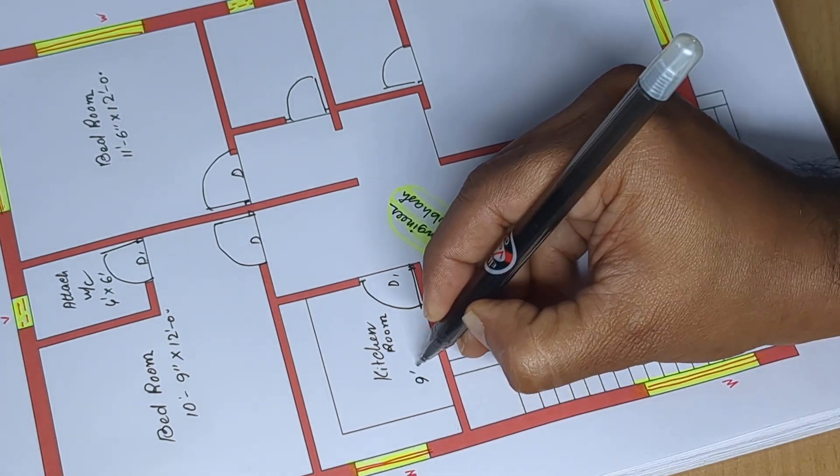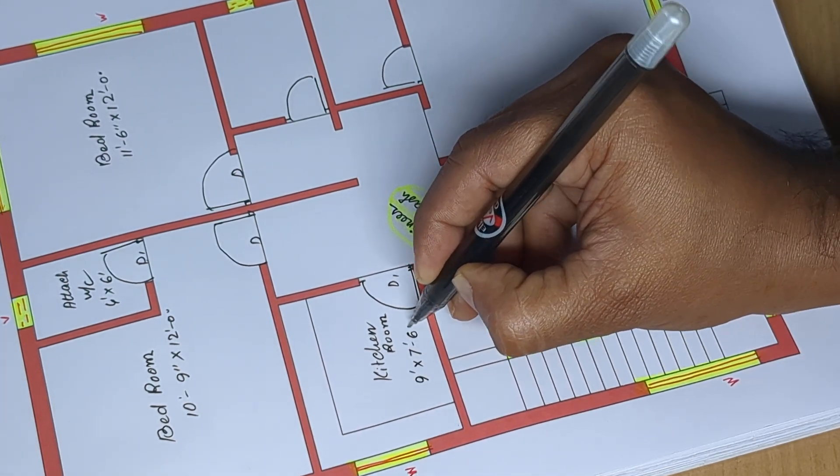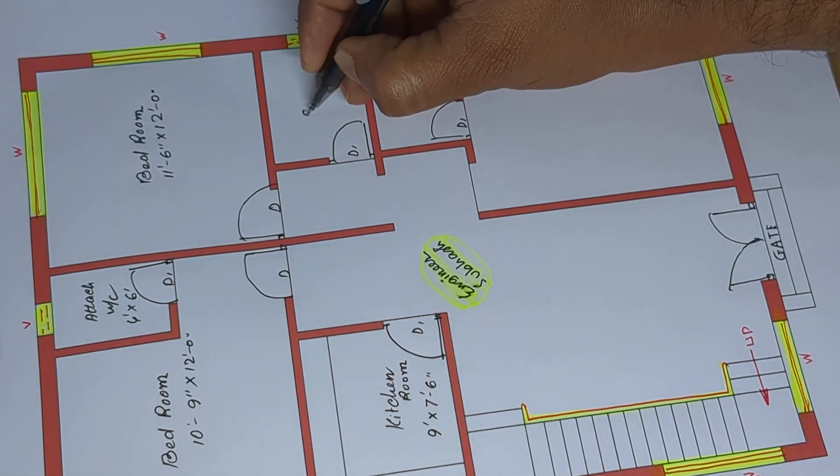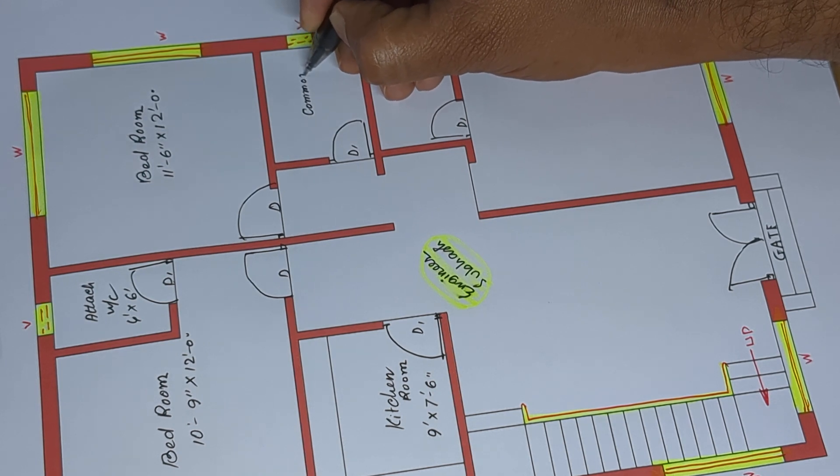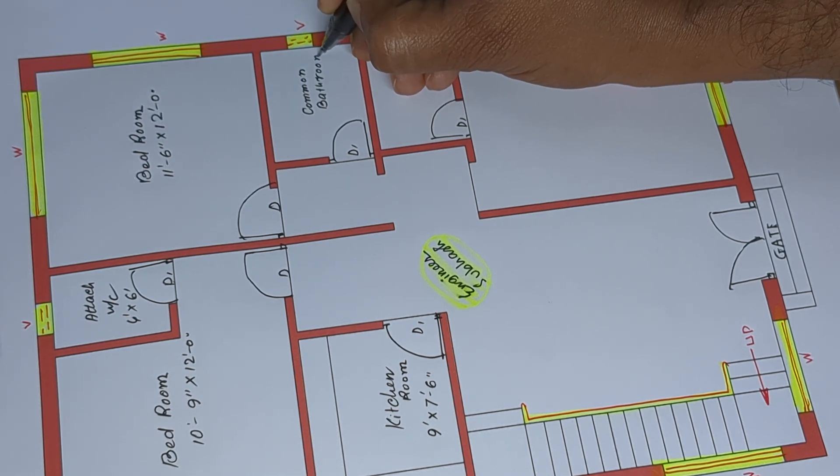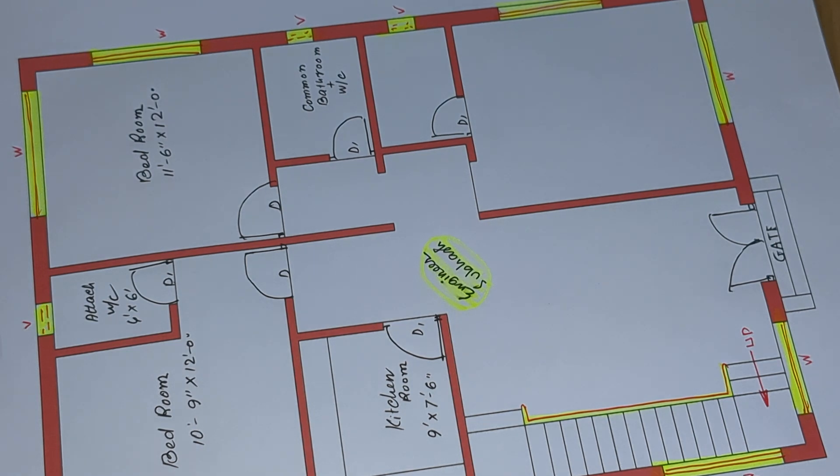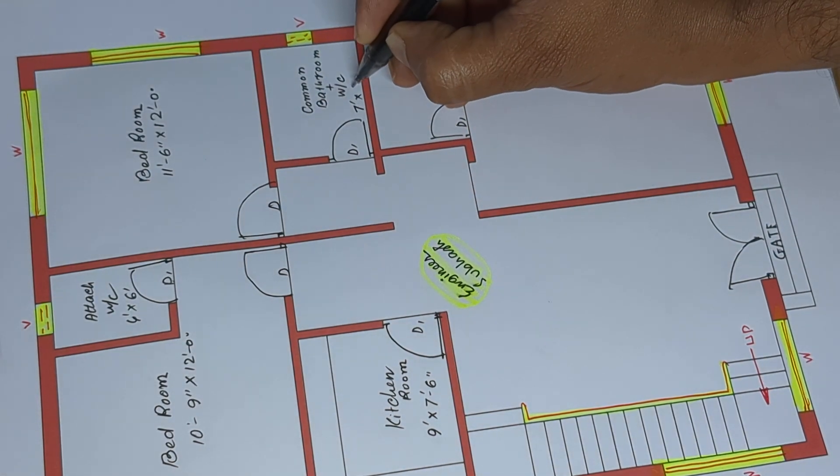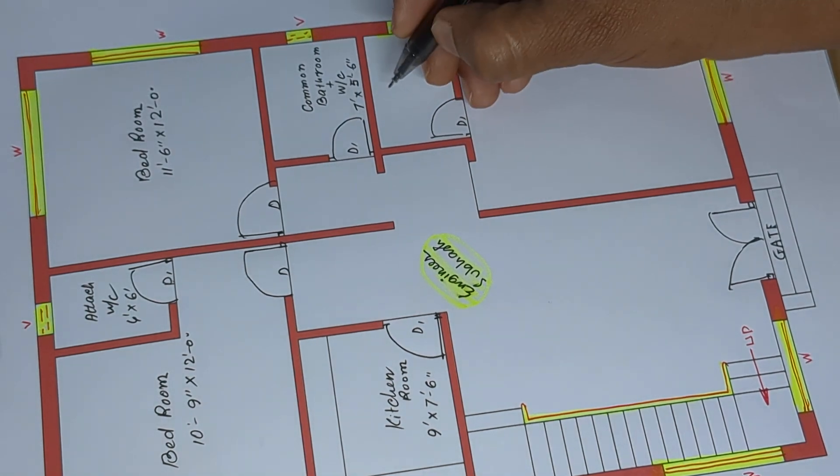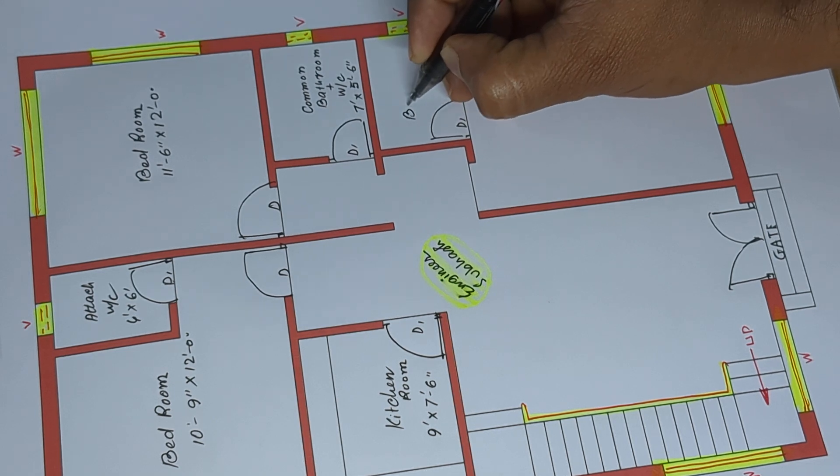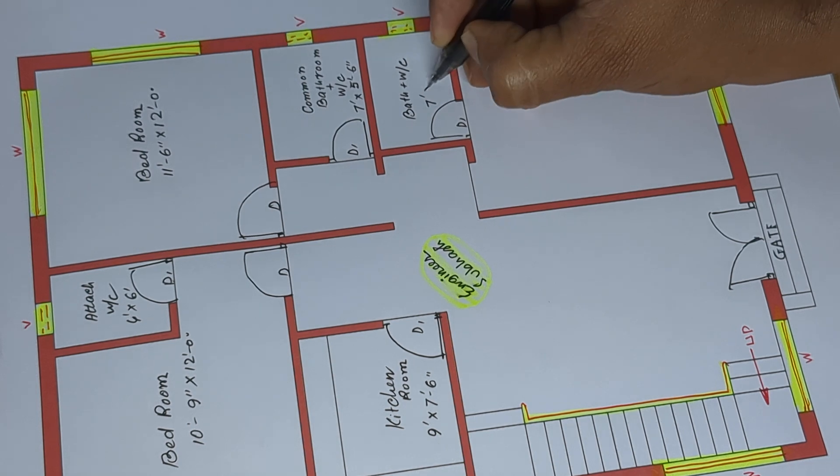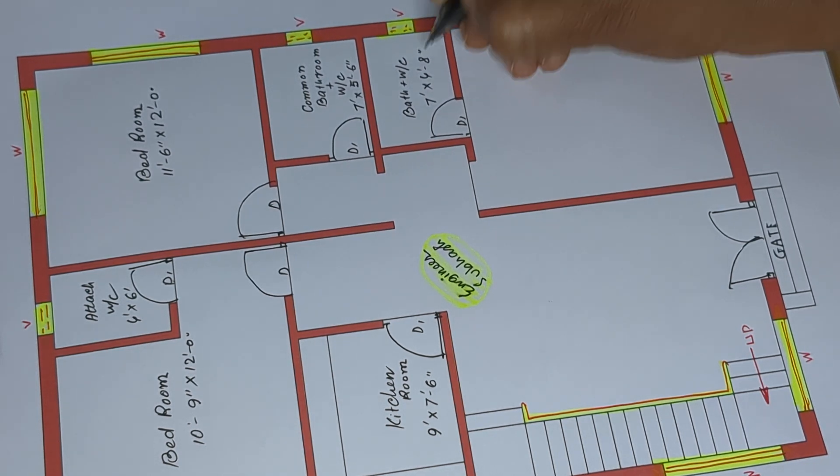Kitchen room 9 by 7 feet 6 inches, D1 common bathroom plus WC, 7 feet by 5 feet 6 inches, and bath plus WC, 7 feet by 4 feet 8 inches.